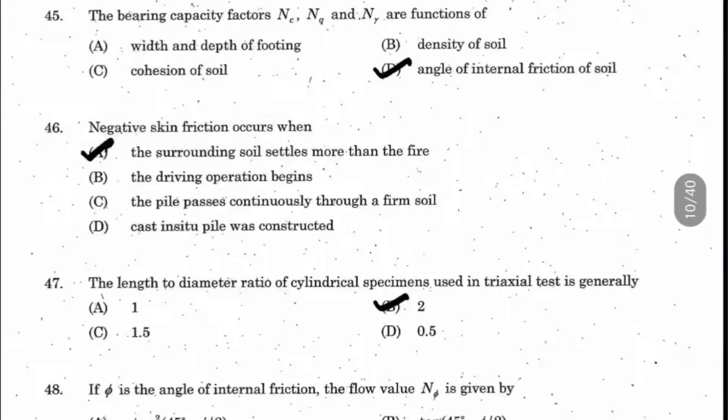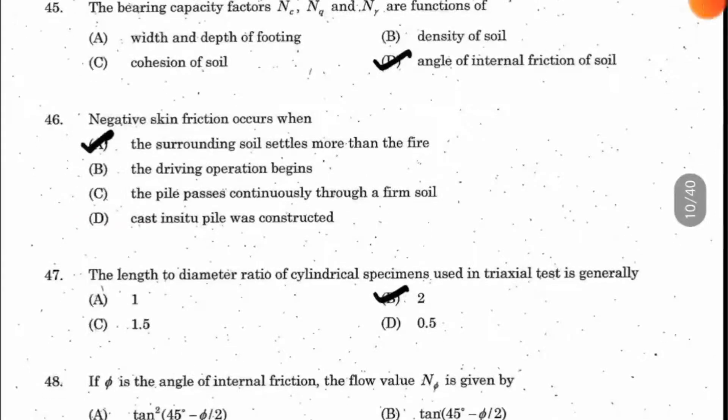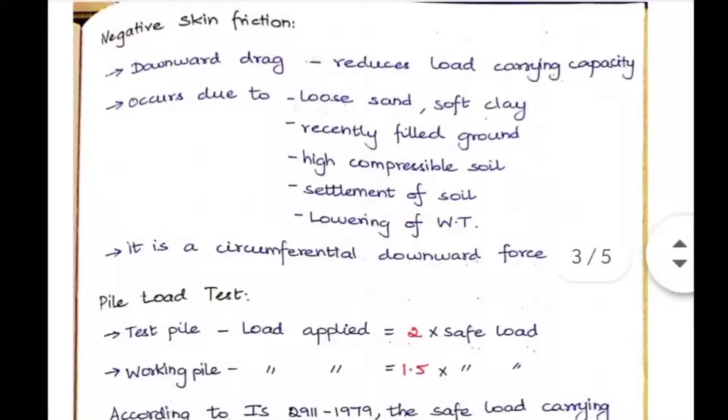Surrounding soil of the pile settles more - when it settles excessively, negative skin friction occurs. Several conditions cause this: loose sand or soft clay, recently filled ground, high compressible soil, settlement of soil is high. The options given include lowering of water table. Under these conditions and types of soils, negative skin friction occurs.